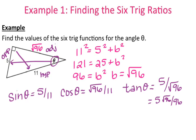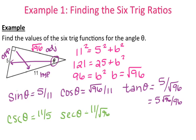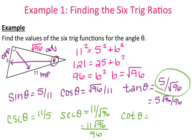Since I know sine, cosine, and tangent, I can find the other 3. Sine matches up with cosecant, so that's 11/5. Cosine matches up with secant, so that's 11 over the square root of 96, which we need to change — so that's 11 root 96 over 96. And tangent matches up with cotangent. I'm going to flip that one over, because once I flip it, I no longer have a radical in the denominator. So those are the 6 trig functions of that triangle.